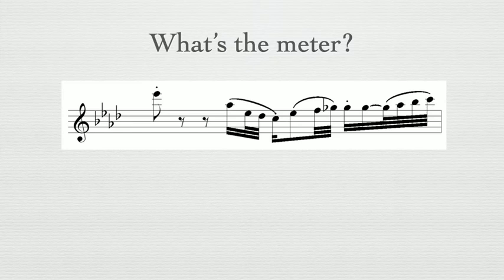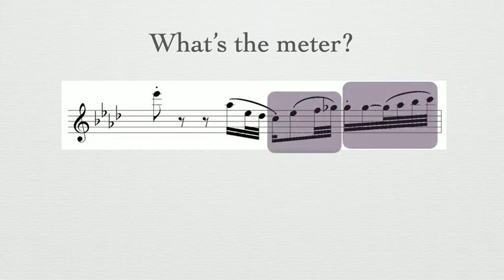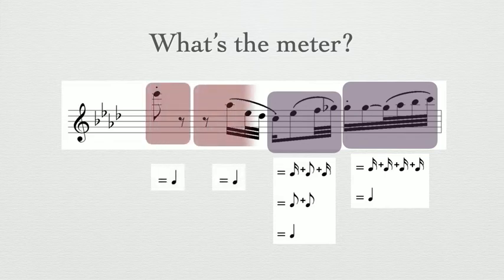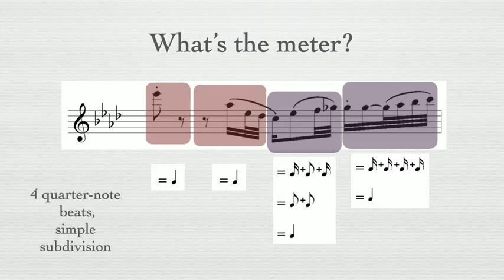What's the meter? You should have found these 2 beamed groups, which each equal 1 quarter note in duration. Dividing up the rhythms and the rest of the measure, we can find 2 more quarter note beats. With 4 quarter note beats in simple subdivision, you should have found common time, or 4/4 meter.